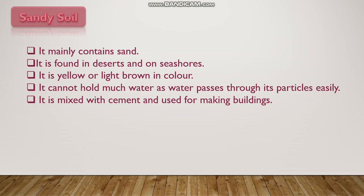Sandy soil mainly contains sand, which means big, light and loosely packed particles. It is found in deserts and on seashores. It is usually yellow or light brown in color and cannot hold much water, as water passes through its particles easily. It is mixed with cement and used for making buildings.